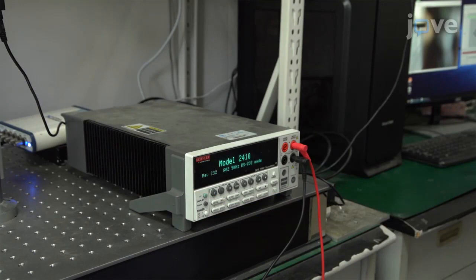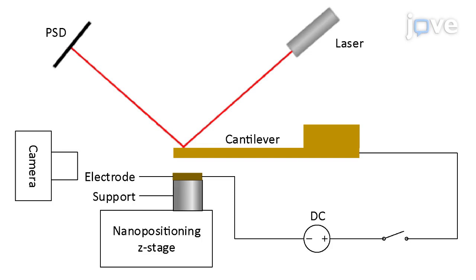A plate electrode is on the nano-positioning Z-stage. It is 100 micrometers below the cantilever with an overlap length of 1.5mm. The cantilever and electrode form a capacitor.